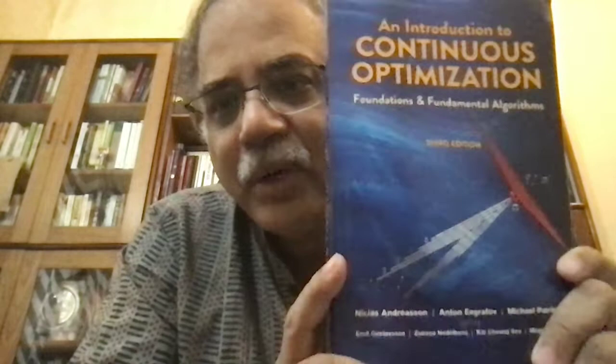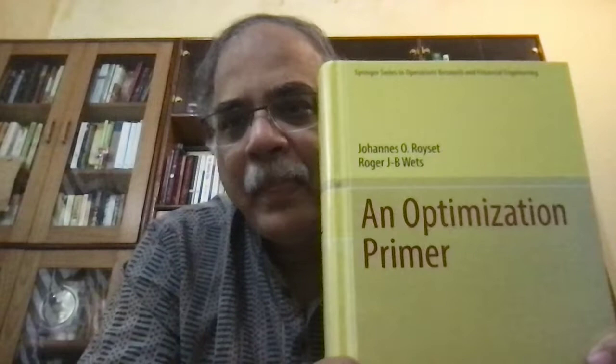Good afternoon friends, I am back again. This time the three books I will show you are from optimization: one, 'Algorithms for Convex Optimization'; two, 'Introduction to Continuous Optimization' by a large number of authors all from Stockholm's Royal Technological University; and a very recent book by Roger Wets and Royset.